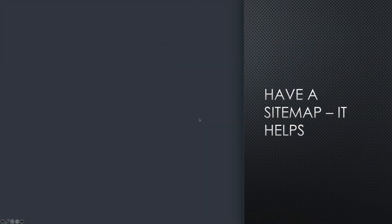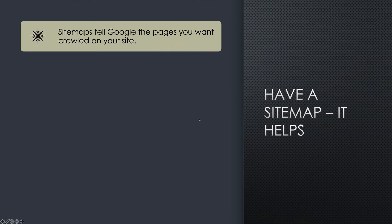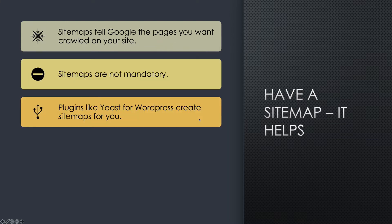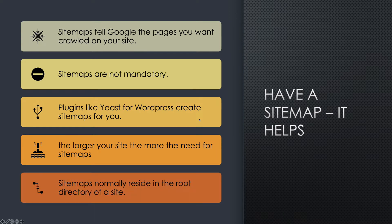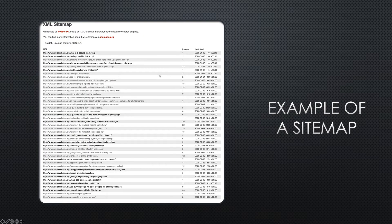Have a sitemap. Sitemaps definitely help — they tell Google the pages you want crawled on your site. They're written in XML, which is basically text. Sitemaps are not mandatory. Plugins like Yoast for WordPress create sitemaps for you. The larger your site, the more the need for sitemaps. Sitemaps normally reside in the root directory of the site. The last modified column in a sitemap is really important because Google will say, we don't need to crawl that page — it's not changed since last time. That's called crawl budget, and it's very important because Google don't want to overload your servers.